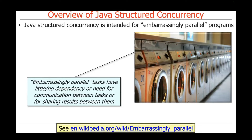Structured concurrency is designed primarily for something called embarrassingly parallel programs. Embarrassingly parallel is a funny name — it's like an embarrassment of riches. It basically means we have a bunch of tasks with little or usually no dependency on each other, so there's no need for them to communicate or share results as they perform their computations independently. A good example would be doing your laundry at a laundromat, where you have many washing machines and can do lots of loads in parallel without them depending on each other.